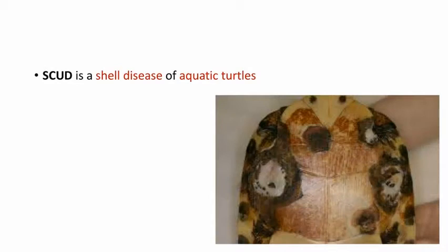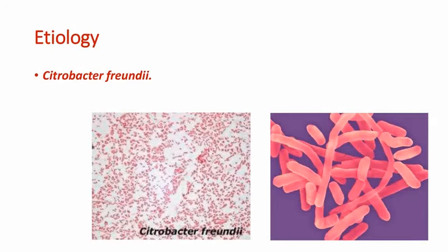Let's see the post-mortem lesions. There will be petechial hemorrhages on the shell and skin, and liver necrosis and abscessation can also be found.